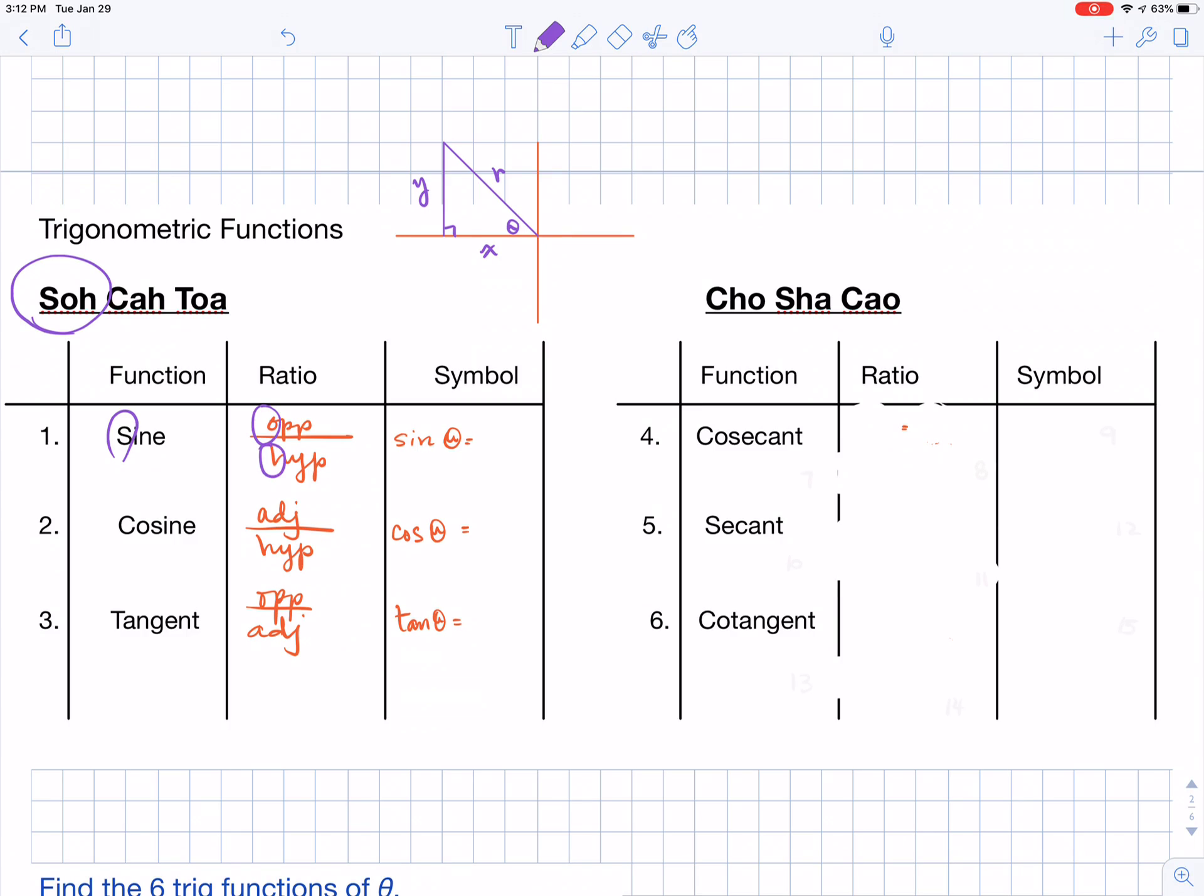And then for cosine, you can see the C-A-H, and for tangent, you can see the T-O-A. So that's where those letters have come from.